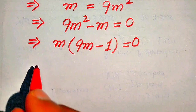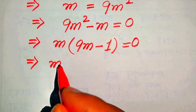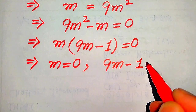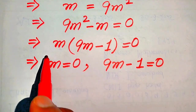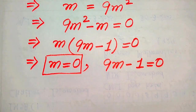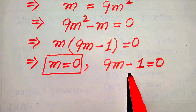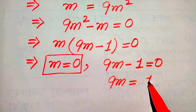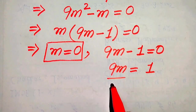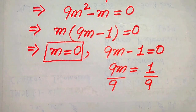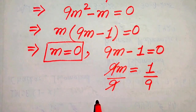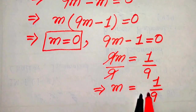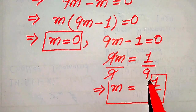We divide this equation into two cases. The first case is m equals zero, and the second case is nine m minus one equals zero. The first case gives us our first root. For the second case, we move minus one to the right hand side to get nine m equals one, then divide both sides by nine. The nines cancel and we get m equals one over nine as our second root.